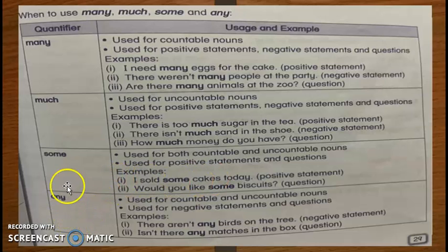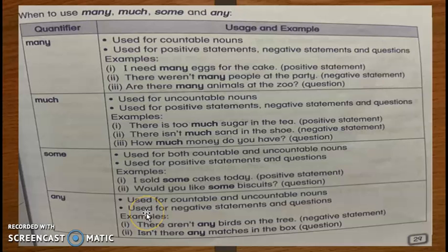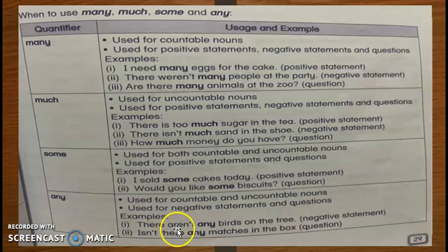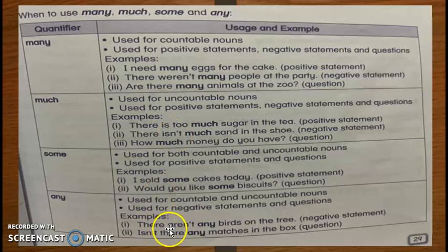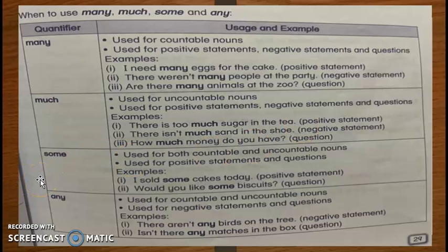Any — use for countable and uncountable nouns. Cumanya it is used for negative statements and questions. For example: there aren't any birds on the tree. You have to see the words 'are not' and 'isn't'. Negative statement mesti ada not — isn't, aren't. Kalau there is, dia jadi positive statement.